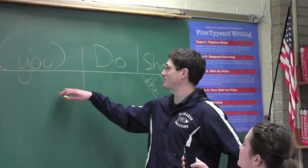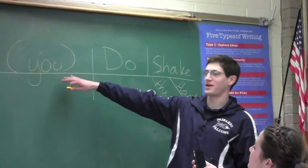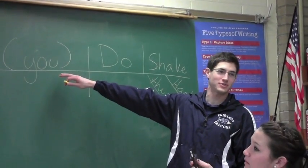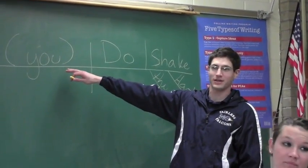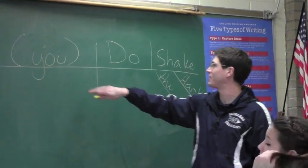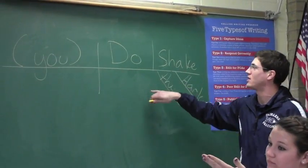When you diagram a sentence, make sure you have the understood subject: you. You've got to have the understood subject. If you don't have it, you get it wrong.